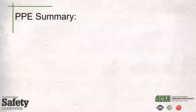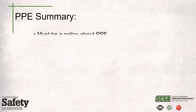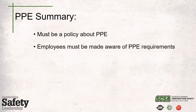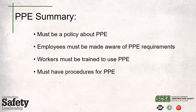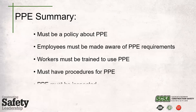To sum up personal protective equipment in the audit tool: you must have a policy about PPE stating your minimum requirements. Employees must be made aware of requirements through orientation, safety meetings, and specialized training like fall protection. Workers must be trained to use PPE — not just given it. They need to know how to use it, wear it, the right fit, how to care for it, its limitations, and what it will and won't protect against. You must have written procedures for use, care, maintenance, and limitations, and PPE must be inspected regularly at manufacturer-recommended intervals.